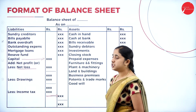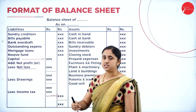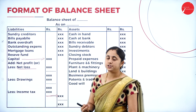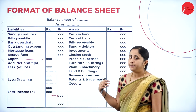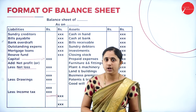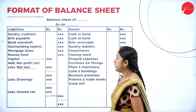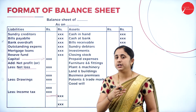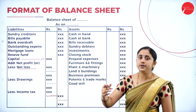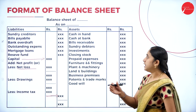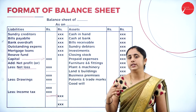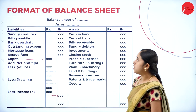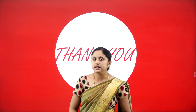In today's session we learned the three-column cash book and the new concept of final accounts of a sole trader — covering the meaning of final accounts, trial balance, trading account, profit and loss account, balance sheet, and their formats. In the next session we will continue with the first problem on final accounts of a sole trader. You need to be able to identify and classify items between the trading account, profit and loss account, and balance sheet. Until then, keep watching. Thank you.